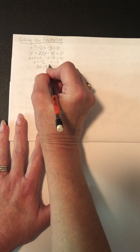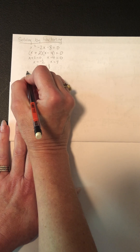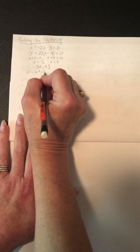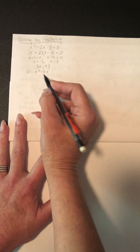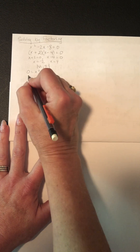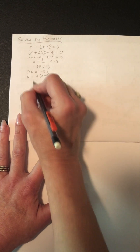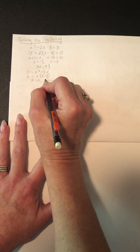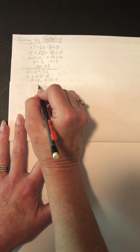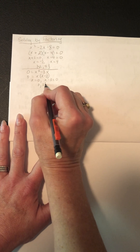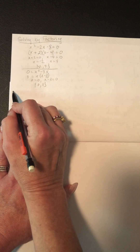If you have something like 0 equals x squared minus 3x, it might seem unfactorable, but don't forget the first step is to look for a GCF. Take out an x, giving x(x minus 3) equals 0, so x equals 0 and x equals 3. Factoring only works if the expression is factorable.